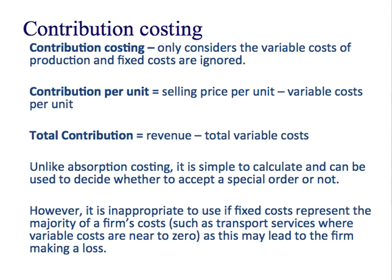Contribution costing — you actually did this as part of the AS course with break-even. Contribution per unit is selling price minus the variable costs. Total contribution can be calculated by multiplying contribution per unit by the total number of units, but it is also known as revenue minus total variable costs. Unlike absorption costing, it's quite simple to calculate, and it can be used to help you decide whether to accept a special order or not. However, because you're ignoring those fixed costs or indirect costs or overheads, you're not going to want to use it where the main bulk of your costs are fixed costs, such as transport, because that's going to be very misleading.